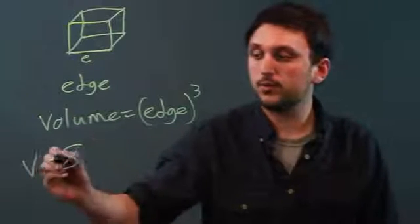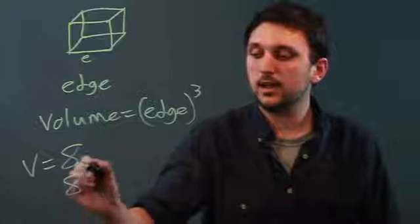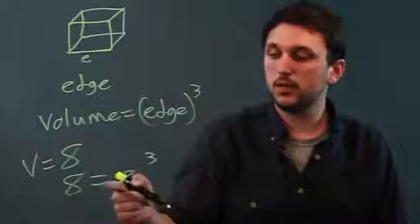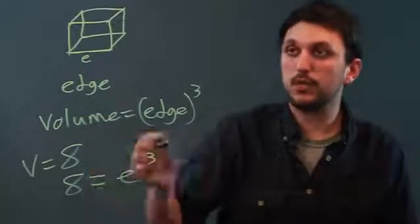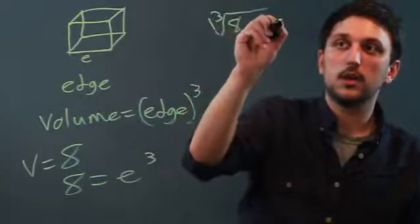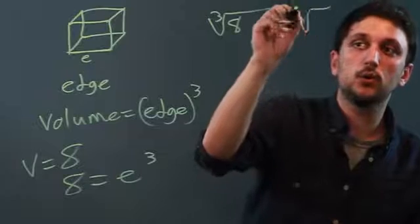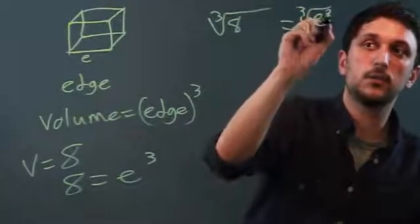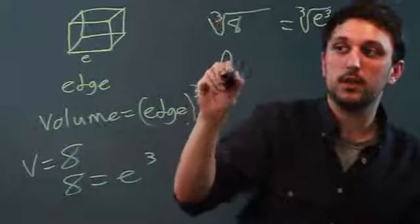Well, if V equals 8, then 8 equals E cubed. So we then take the cube root of each side. I'm going to do that up here. We take the cube root of 8 and we take the cube root of E cubed. Well, the cube root of 8 is 2.